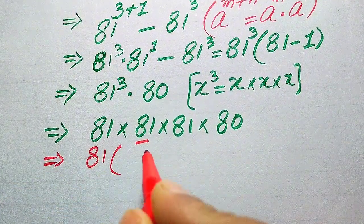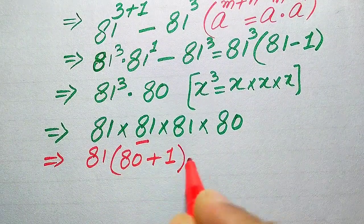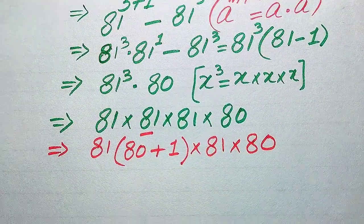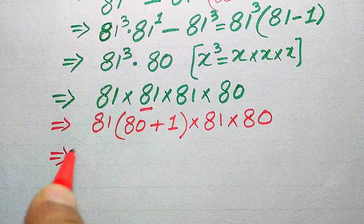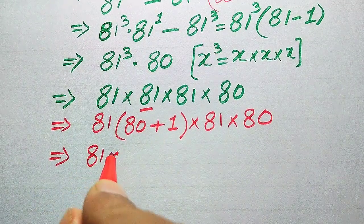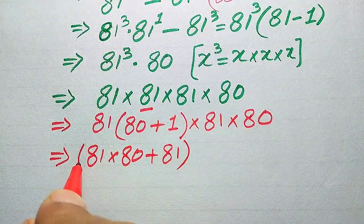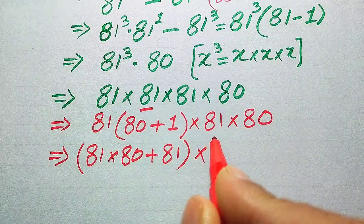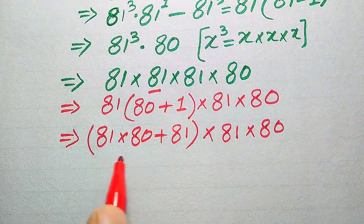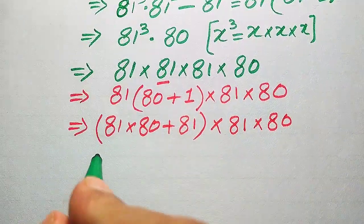We write 81 as 80 plus 1, multiplied by 81, multiplied by 81, multiplied by 80. When we multiply 81 by both terms, it becomes 81 times 80 plus 81 times 1, which equals 6480 plus 81. This result is then multiplied by 81 and by 80.